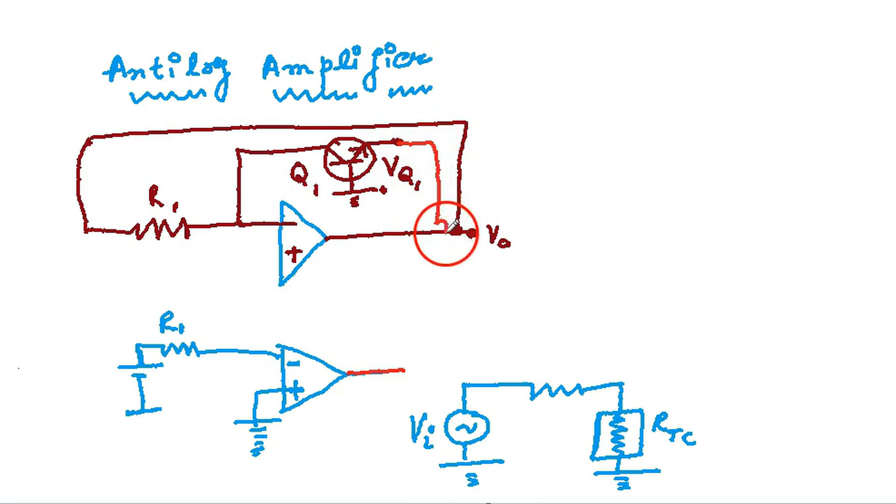The emitter terminal of Q1 is connected to the output of the second Op.